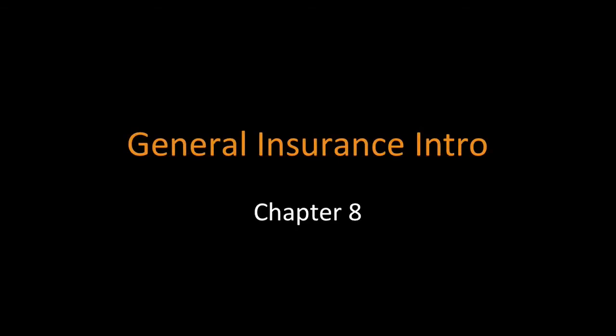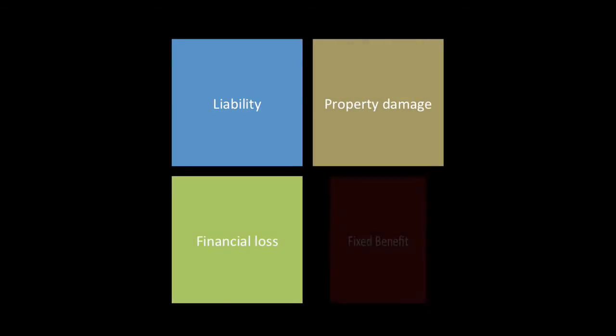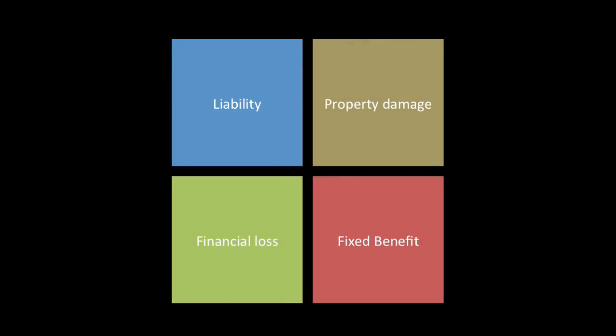We're going to talk about general insurance, just an introduction — it is chapter eight. There are four key areas of general insurance: liability cover, property damage, financial loss, and fixed benefit. I'm going to go a little bit in depth into liability and then just touch on the other three.